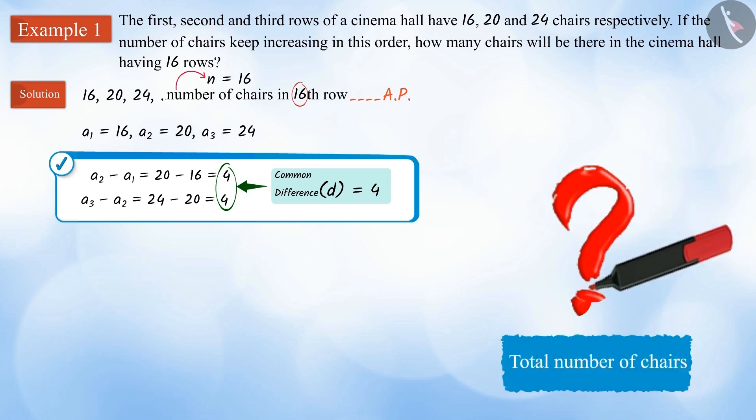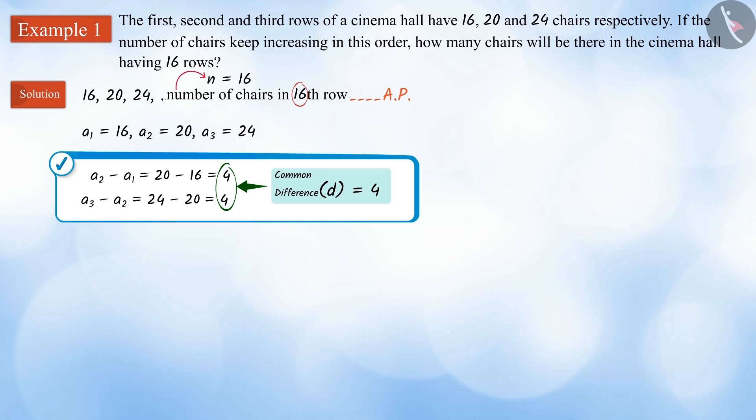Now, what do we have to do to find the total number of chairs in the cinema hall? To know the total number of chairs, we need to find the sum of 16 terms of the arithmetic progression. And how can we do this?